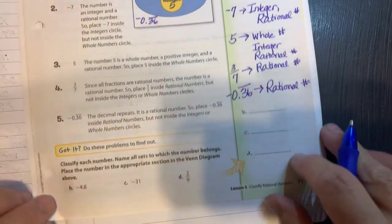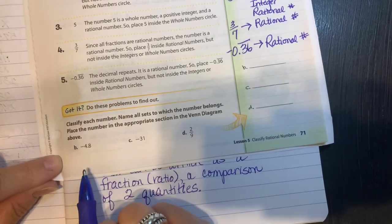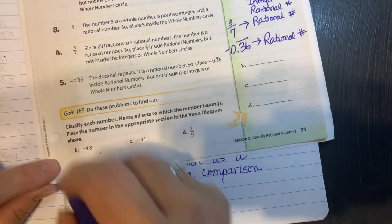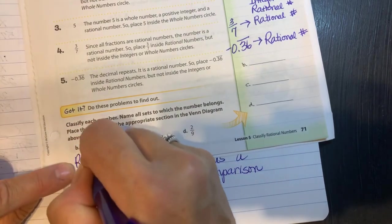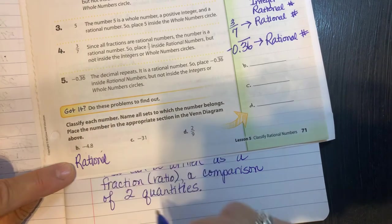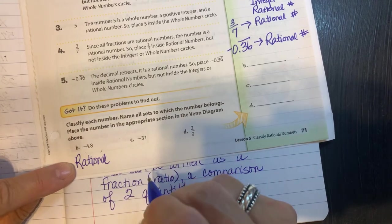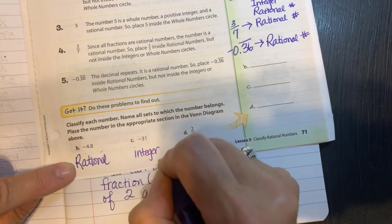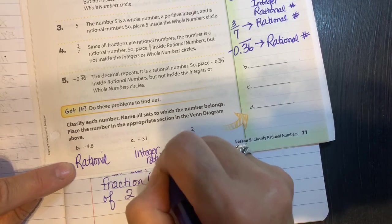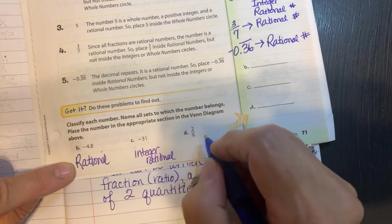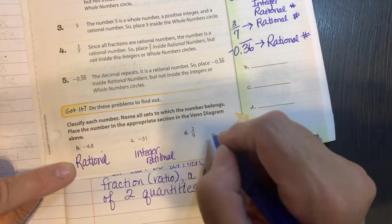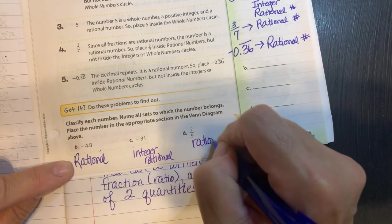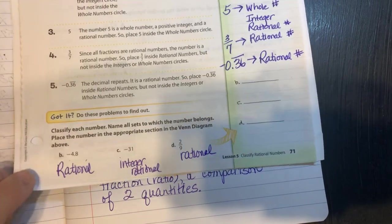So looking down here, let's look at part B. You've got negative 4 and 8 tenths. That would be rational. Negative 31. That would be an integer and rational. 2/9 would be rational.